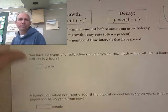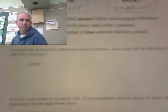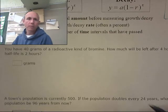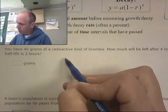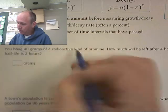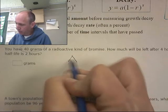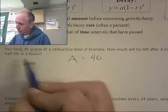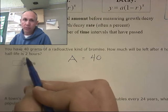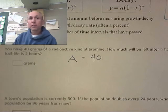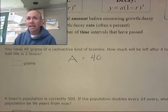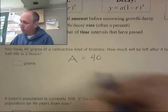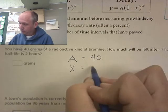And you're probably going to need a calculator for this. You have 40 grams of a radioactive bromine. I don't know what that is. But that's my starting value. That's my A. I have 40 grams. That's my initial amount. How much will be left after four hours if its half-life is two hours? Okay. So what's happening here is every two hours I'm going to lose half of it. That means the number of intervals that will have passed is two intervals.